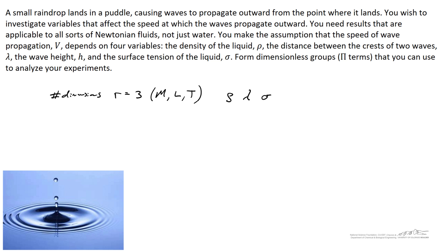We'll find that we can't choose the density of the fluid, the wavelength, and the height of the waves as repeating variables. The reason we can't do that is because the wavelength and the height have the same dimensions which are equal to length.